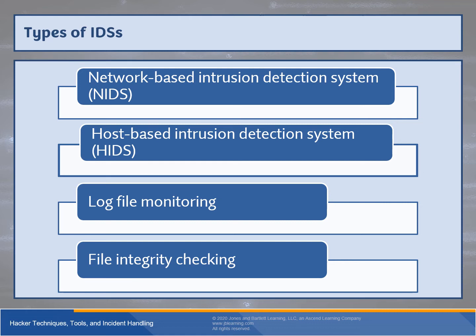The human element remains necessary no matter how advanced IDS and IPS systems become. File integrity checking — one of the oldest and simplest IDS types — maintains a baseline of what a system file was supposed to be versus what it is now. Tripwire is a well-known example of an IDS that functions this way.